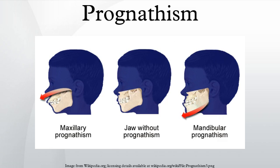The vast majority of prognathism in humans is due to normal variation among phenotypes. In human populations where prognathism is not the norm, it may be a malformation, the result of injury, a disease state, or a hereditary condition. Prognathism is considered a disorder only if it affects mastication, speech, or social function as a by-product of severely affected aesthetics of the face.